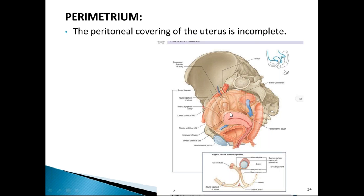The peritoneum covers the fundus and completely covers the posterior surface of the body and cervix of the uterus, forming a deep pouch called the pouch of Douglas. Laterally the peritoneum forms two leaflets of the broad ligament. Connected to the uterine tube, it forms the mesosalpinx; to the ovary, the mesovarium; and down to the uterus, the mesometrium.